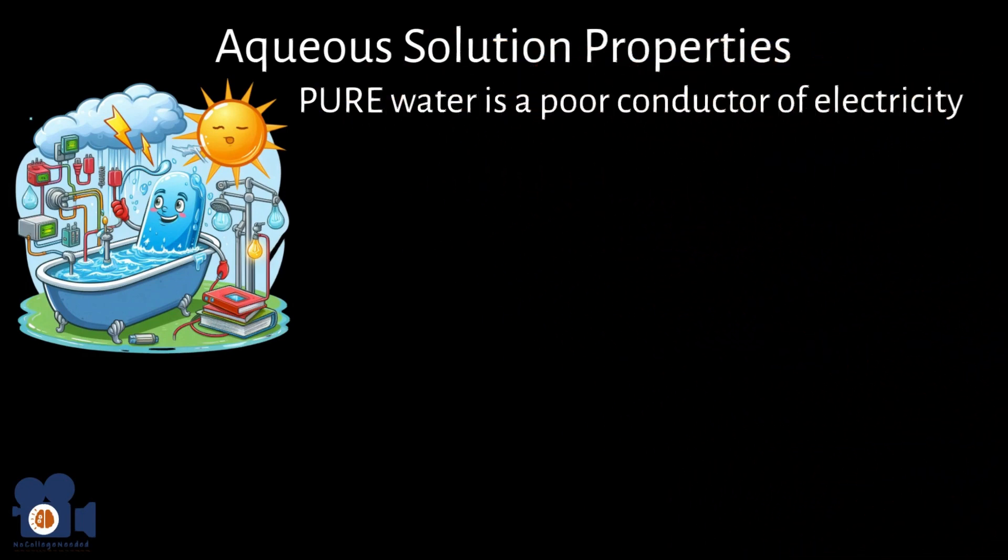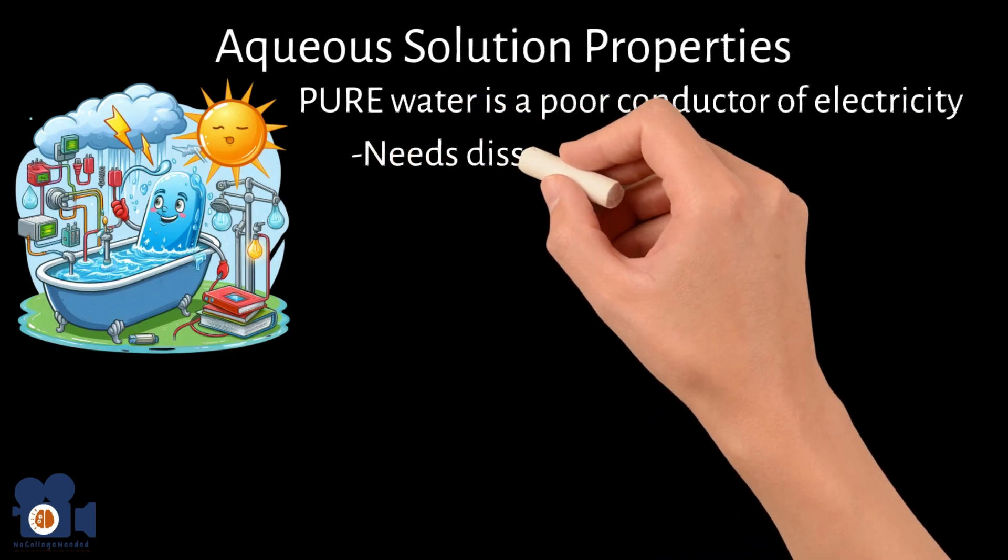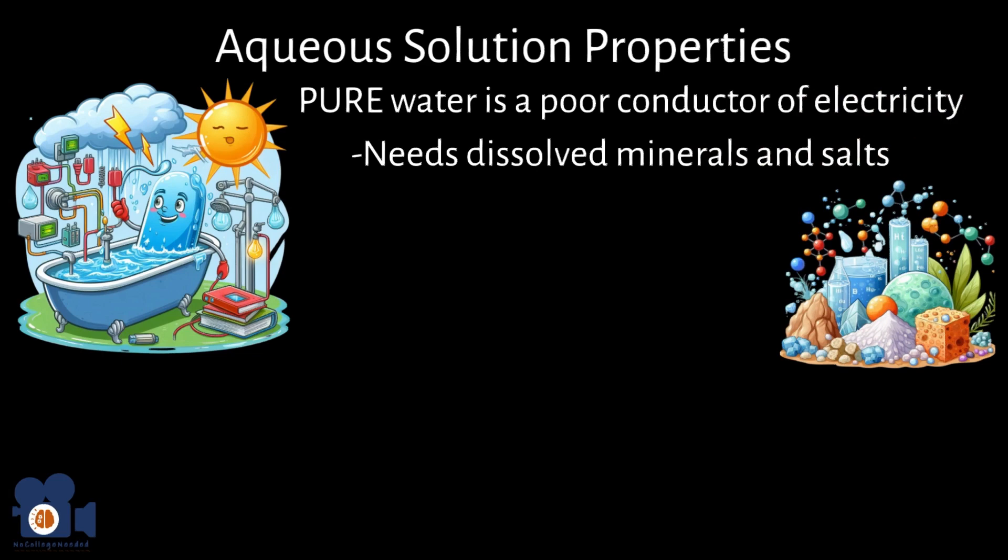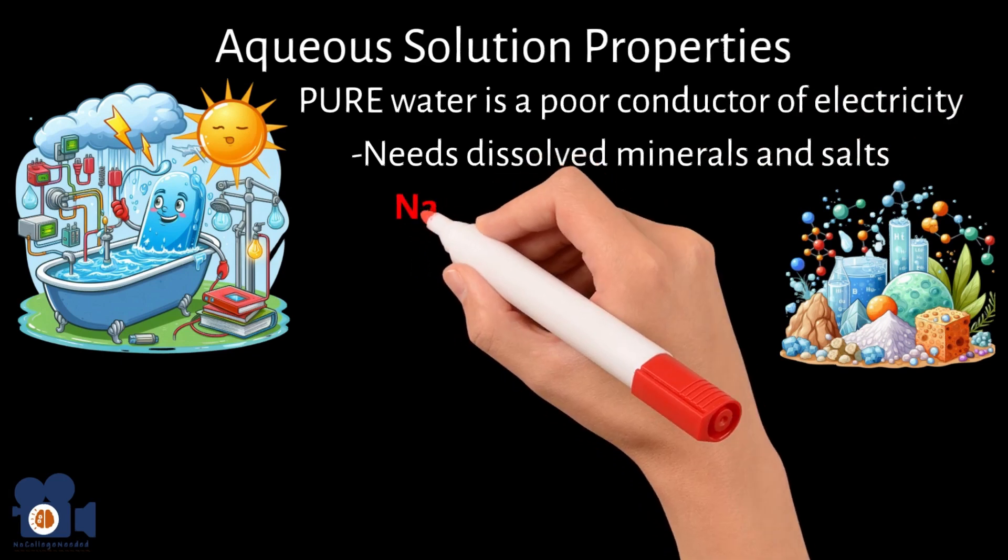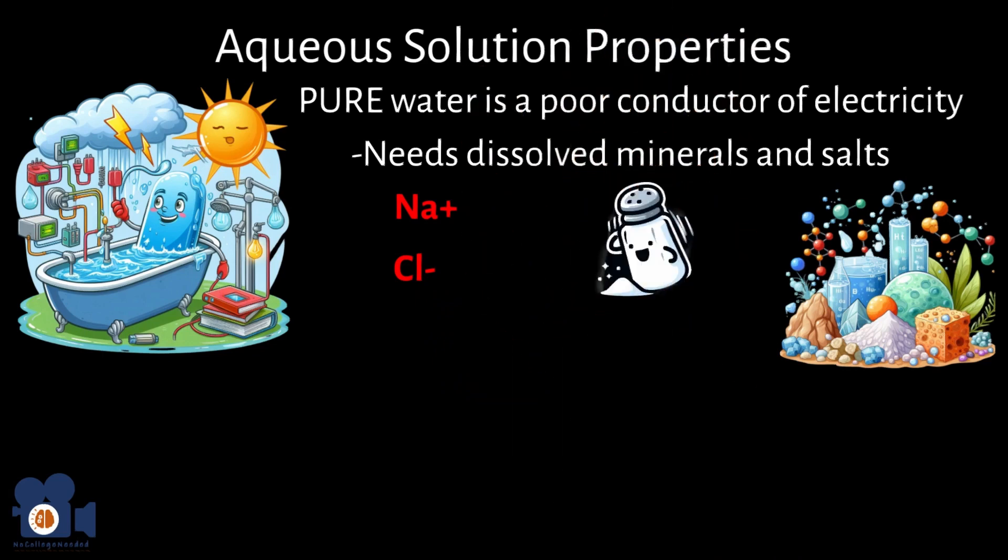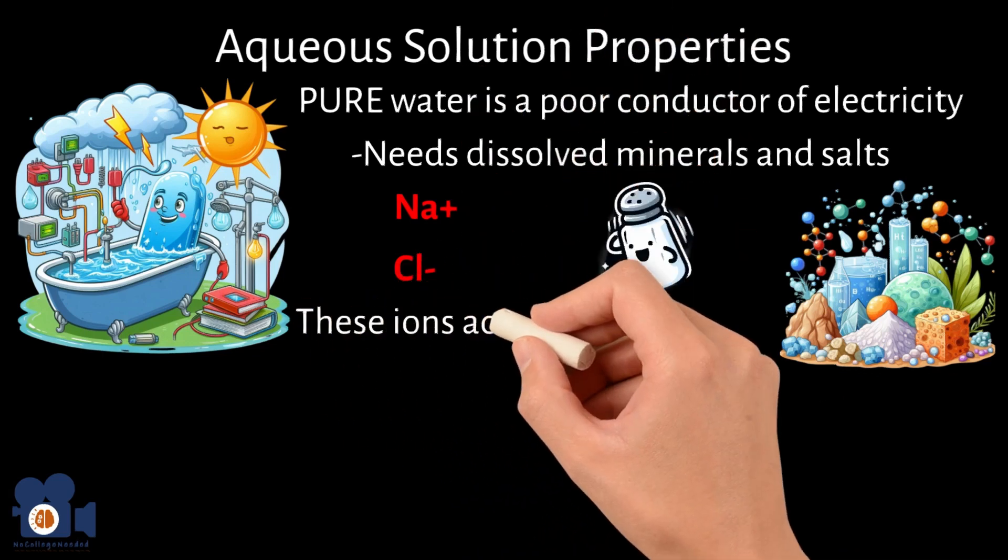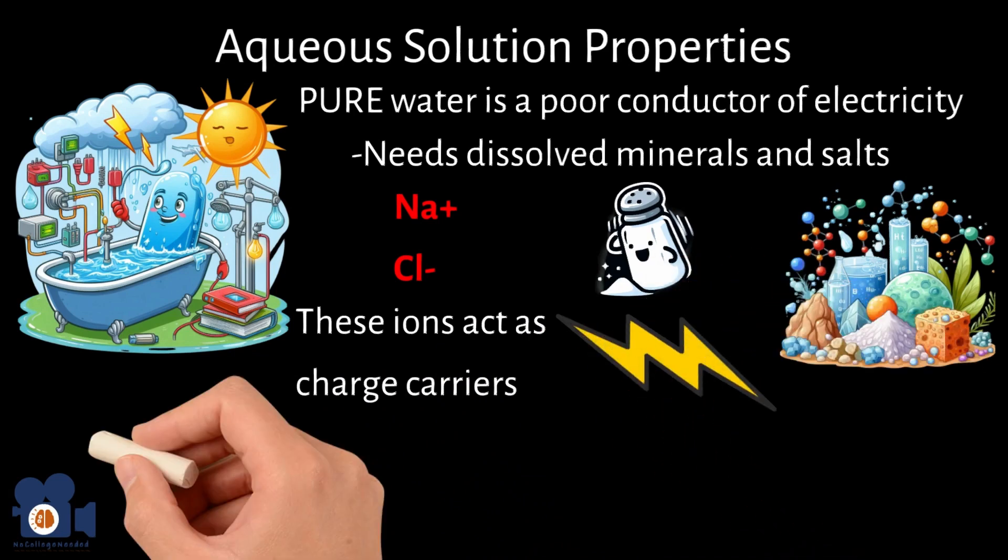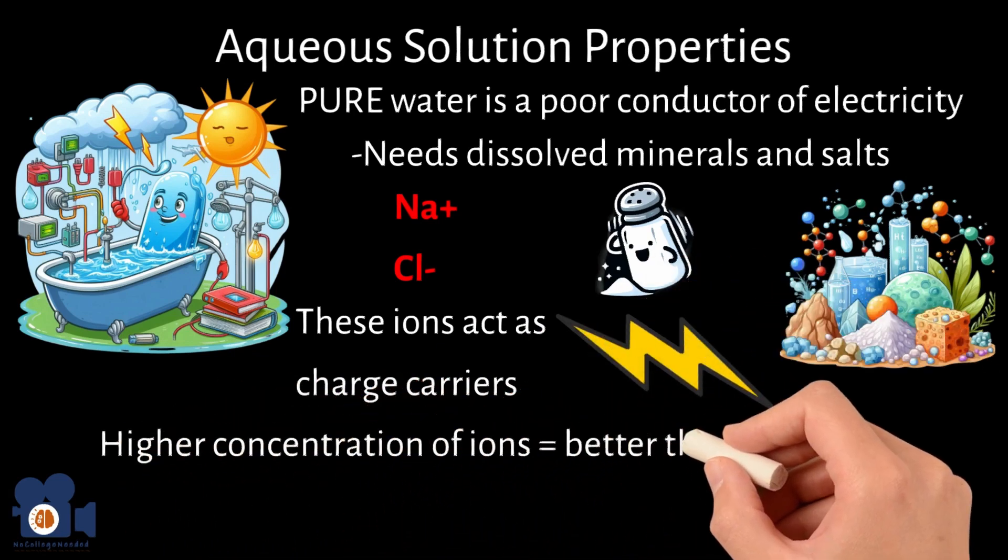For water to be a good conductor, it needs dissolved minerals and salts which dissociate into charged ions like sodium Na+, and chlorine Cl- from table salt. These ions act as charge carriers, allowing the water to conduct electricity. The higher the concentration of ions, the better the conductivity.